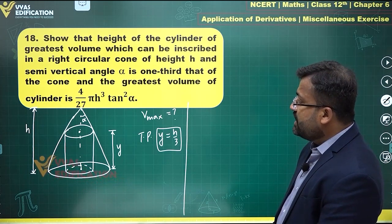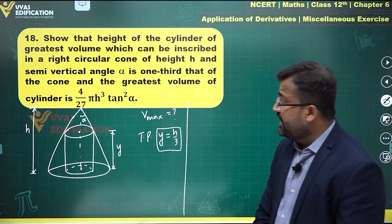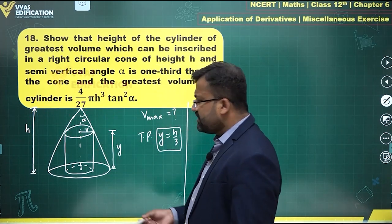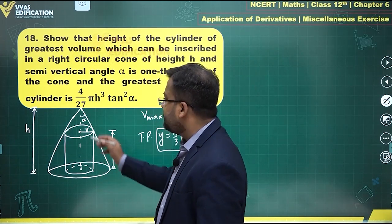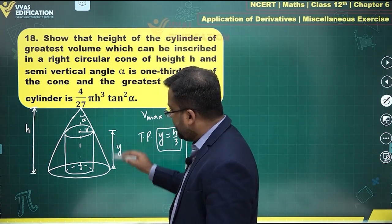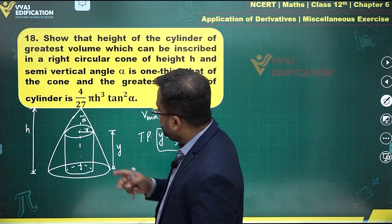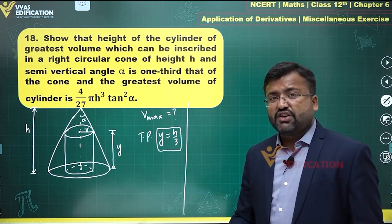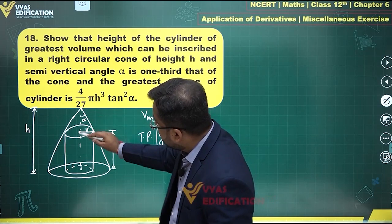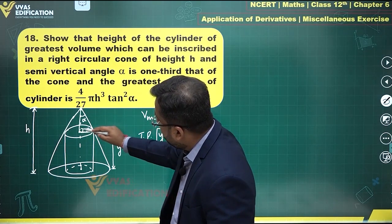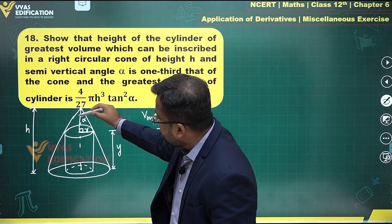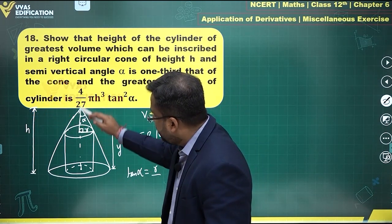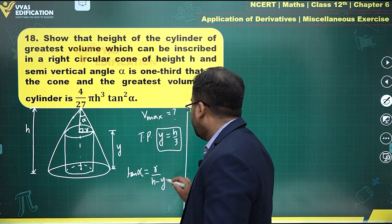For the cylinder's volume we need the radius, let's call it small r, and the height is y. Alpha and h are constants, so we can find a relation between r and y. This triangle is a 90-degree triangle: tan α = perpendicular / base, where the base is (h - y), so r = (h - y)·tan α.